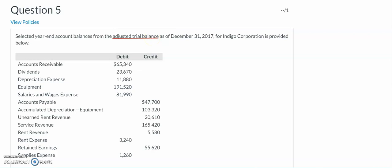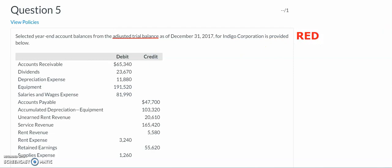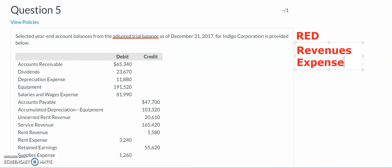One tip I can give you is that the accounts we need to close out at the end of the accounting period are shown in red. The accounts we need to close out specifically are revenues and expenses. Revenues and expenses are reported on the income statement for a period of time, so in order to start the next accounting period with a zero dollar balance, we need to close out these accounts.